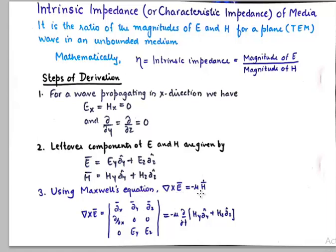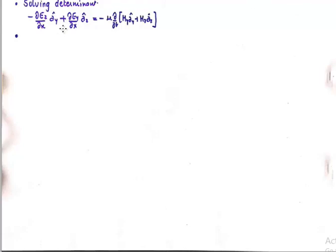Curl of E is equivalent to −μ ∂H/∂t. Expanding the curl of E, the ∂/∂Y and ∂/∂Z terms are zero and E_X is also zero, so we are left with E_Y, E_Z, and ∂/∂X on the left-hand side. On the right-hand side we are left with only two components of H, which are H_Y and H_Z. That is step number three; the next step is to solve that determinant.